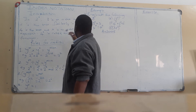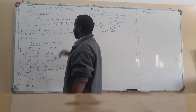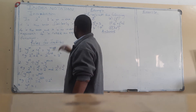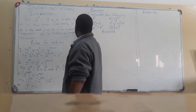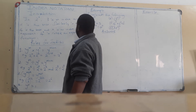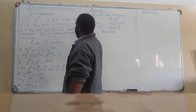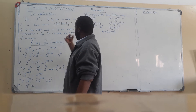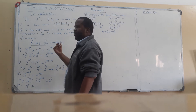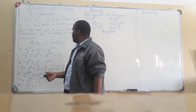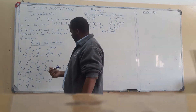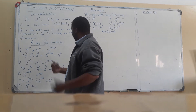Similarly for 4 to the power x: 4 to the power x implies that 4 is the base, x is our index, x is our power, x is our exponent.